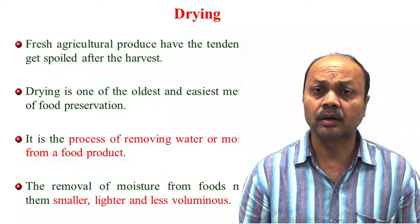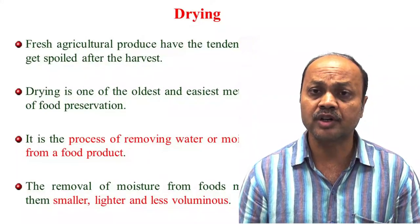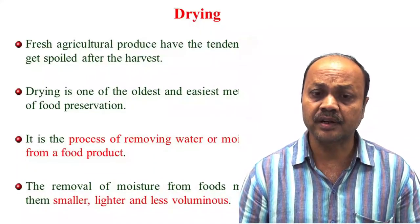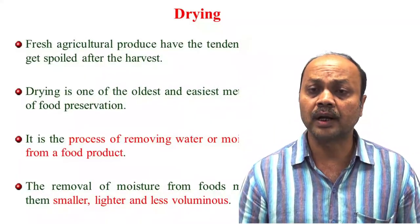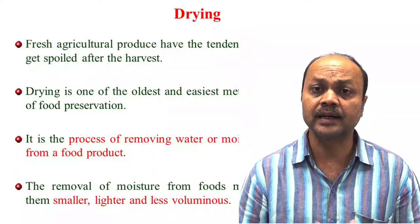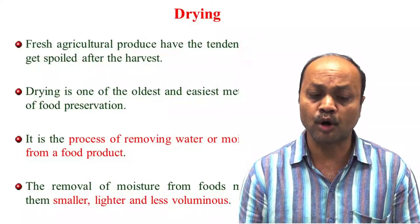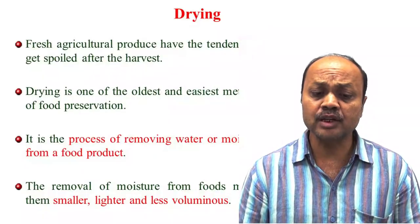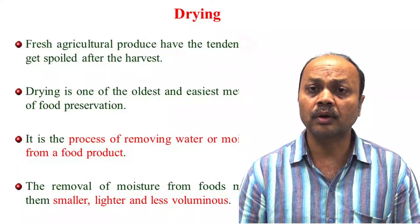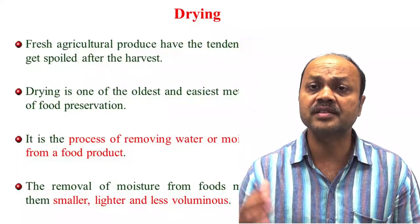Before we begin, what is drying? You know that in India, we grow a lot of crops, and after harvesting they have a high moisture content. So normally, even paddy after harvesting, we go for drying. Due to the high moisture content of fresh agricultural produce, it gets spoiled. Basically, drying is the process of removal of moisture content to a safe level so that it can be stored or further processed. After drying, the product becomes smaller, lighter, and the volume is also less. Drying is one of the oldest and easiest methods for food preservation — a very common method for extending the shelf life of fresh produce.